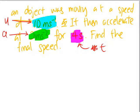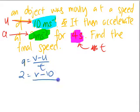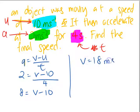So how to find the final speed? Same thing, substitute your value here. Your formula is A equals to V minus U over T. So A, we know that it's 2. V is the one that we want to find. U is 10 at the start. And then, how long was the time taken? 4. So you do some algebraic manipulation. A equals to V minus 10. And after that, V is equals to 18 meters per second.